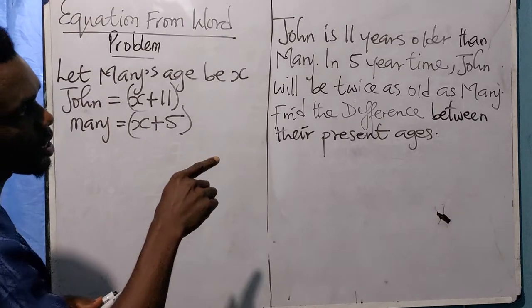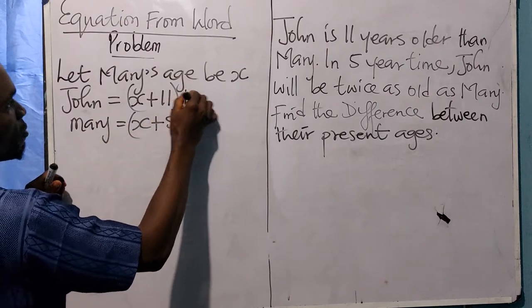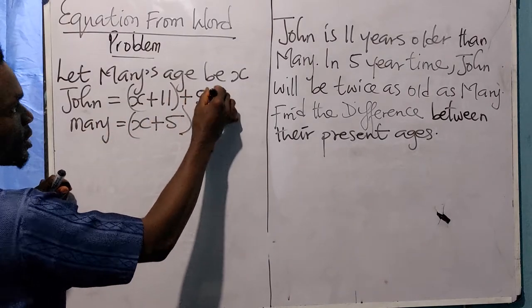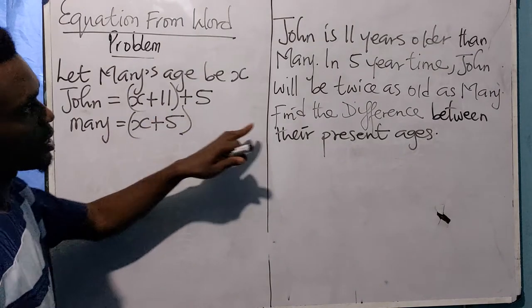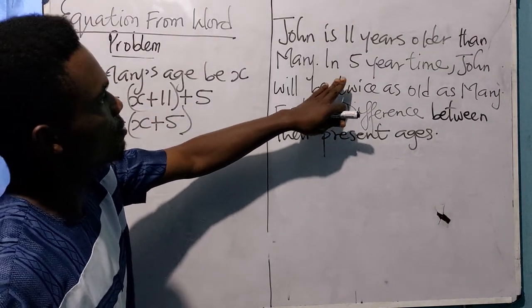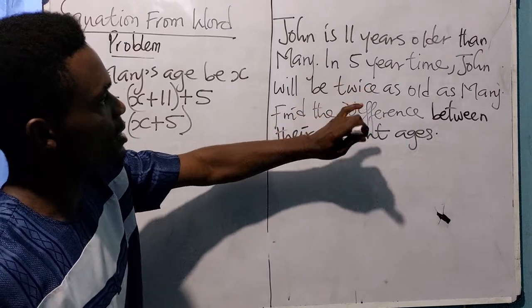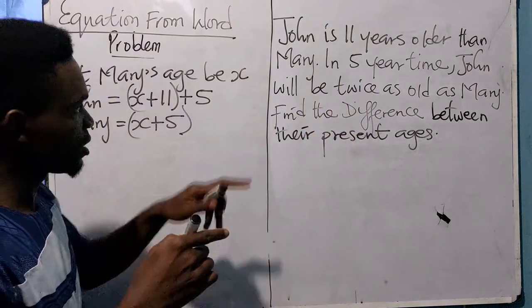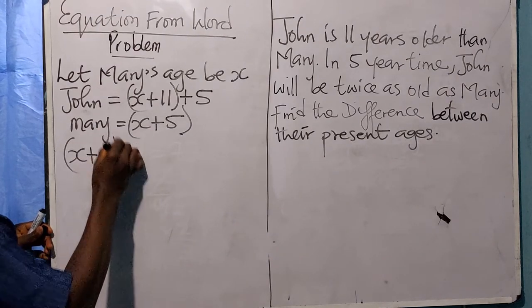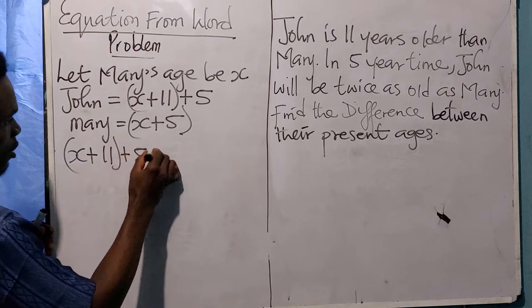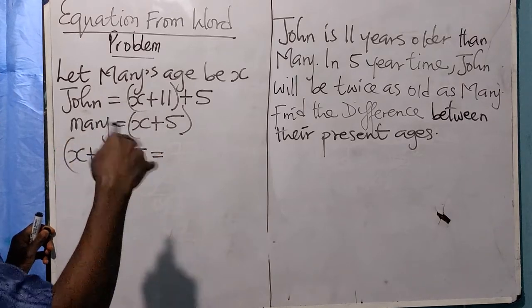In five years time, an additional five years is added to John's age. The problem says in five years time John will be twice as old as Mary, which means x plus 11 plus 5 equals twice Mary's age.